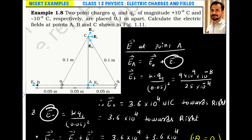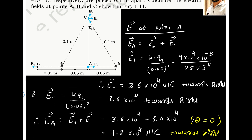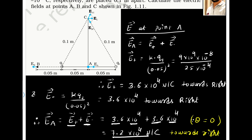The electric field due to the negative charge is KQ2/R². All the numbers are the same, so the result is also 3.6×10⁴ N/C and it is also towards the right. Since the two vectors are equal and in the same direction, we add them directly: E₊ + E₋ = 3.6×10⁴ + 3.6×10⁴ = 7.2×10⁴ N/C, directed towards the right.